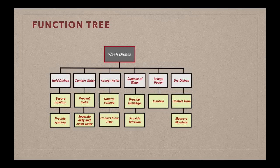And then we have the next level of functions. We're starting to break each of these major functions into sub-functions. And so in holding dishes we need to find a way to secure the position of the dishes, to hold them steady. We need to provide adequate spacing to ensure that the dishes get clean. And there might even be more than that. Contain water, we need to think about ways to prevent leaks within our system. We need to find ways to separate the dirty water from the clean water. In terms of accepting water, we might be looking at how to control the volume of the water, how to control the flow rate, and so forth. So the purpose of this function tree is to show you the major functions and to break down those major functions into sub-functions that would enable us to achieve the overall function of washing dishes.